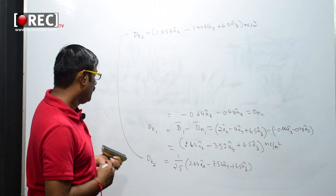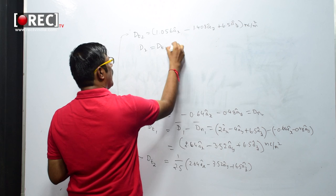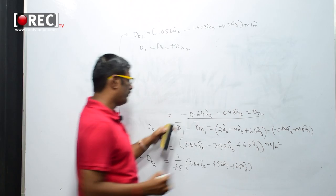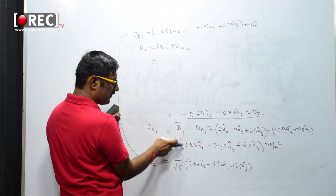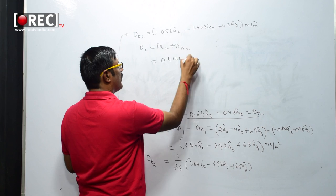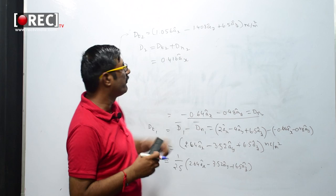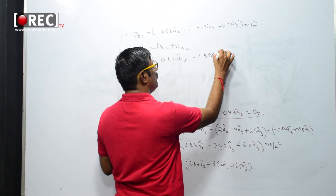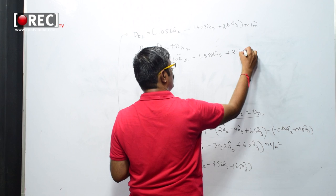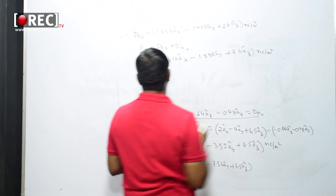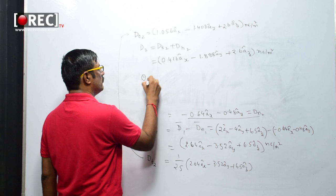To get D2, we add D_T2 and D_N2. Since the normal component satisfies ε_r1 × E_N1 = ε_r2 × E_N2, D_N2 = D_N1 = -0.64âx - 0.48ây. Adding: (1.056 - 0.64)âx + (-1.408 - 0.48)ây + 2.6âz = 0.416âx - 1.888ây + 2.6âz nC/m².